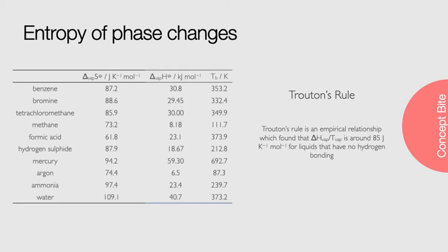There are a few exceptions to this rule, though. Liquids with hydrogen bonding have a lower molar entropy in the liquid phase than those without, and so the entropy change for this process is bigger than predicted by Trouton's rule. Some carboxylic acids, such as formic acid, display this hydrogen bonding in the liquid phase, but also form dimers in the gas phase, resulting in a negative deviation from this rule.